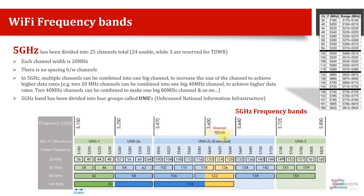Within the 24 channels, there is a TDWR range reserved mostly for radars, which is not usable in most countries. Roughly, we can say 24 channels are usable out of 25. Furthermore, we can combine channels: two 20 MHz channels make 40 MHz, two 40 MHz make 80 MHz, and combining two 80 MHz gives a 160 MHz channel. Including all bonding combinations, there are 45 total channel options, but the standard reference is 24 non-overlapping 20 MHz channels.